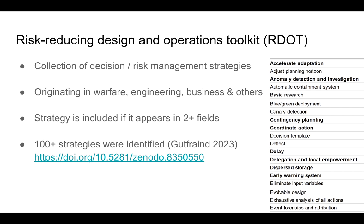Alphabetically, the first strategy in the R.DOT catalog is 'accelerate adaptation': if you're facing uncertainty, you want to develop more flexibility in your organization so that you can more easily adapt. In an adversarial setting, you want to be more agile than your adversary. Another example is 'disperse storage', also used in warfighting, particularly against aerial threats. The idea is you don't want to put all your eggs in one basket — you store critical resources in multiple places so that if one gets attacked, you have reserves somewhere else.